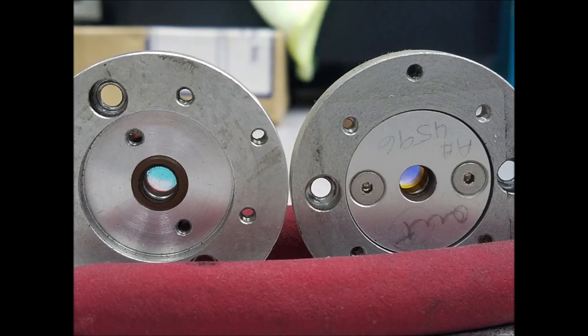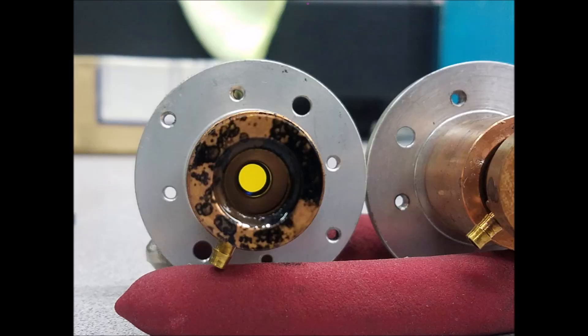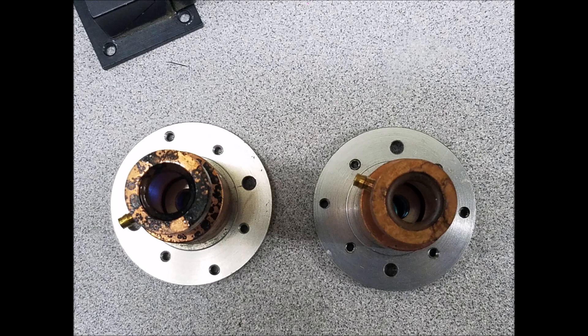Argon ion lasers have optical components on each end of the laser tube, the high reflector and output coupler. The output coupler is where the beam emits from, though it reflects most of the light back into the laser to maintain stimulated emission. The high reflector is on the back of the laser and reflects all the light that hits it. These two optics reflect light back and forth. Both of these optics were removed for cleaning. They also needed to be taken off before the laser tube could be taken out and cleaned.